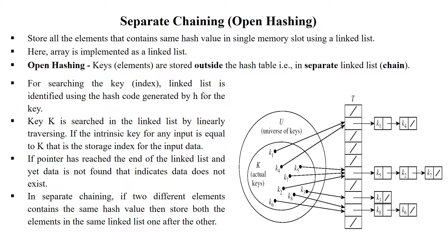Welcome to separate chaining, which is also called the open hashing technique. It is called open hashing because the keys are stored outside the hash table in the form of a linked list, which is called a chain. So the elements are stored separately outside the hash table using chaining — that's why it is called separate chaining.